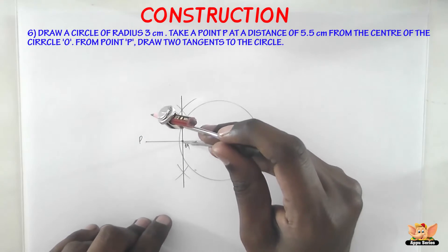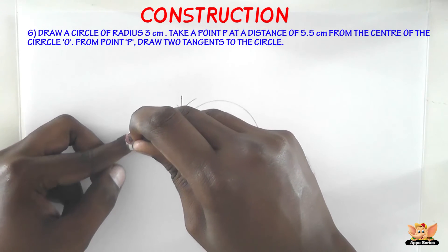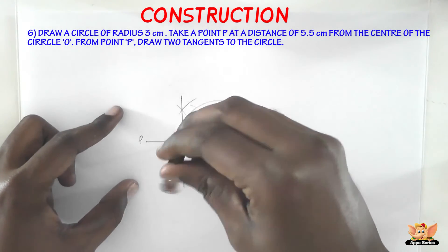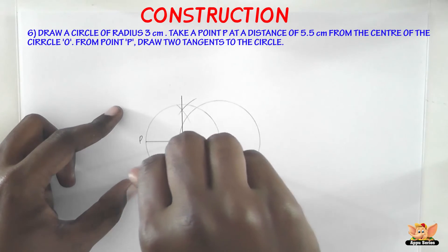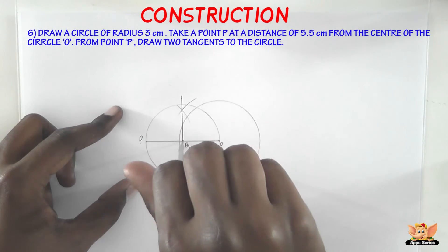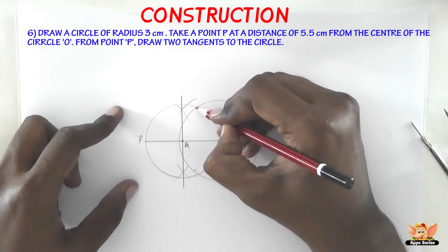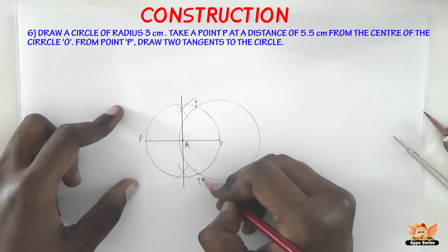Now what we have to do is taking Q as center and QP or QO as radius, draw a circle now. Now this circle that we draw is going to intersect at the points here. Let's name this T and P dash.